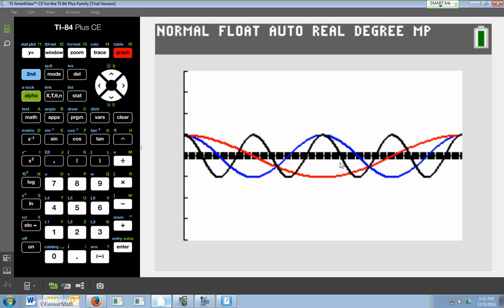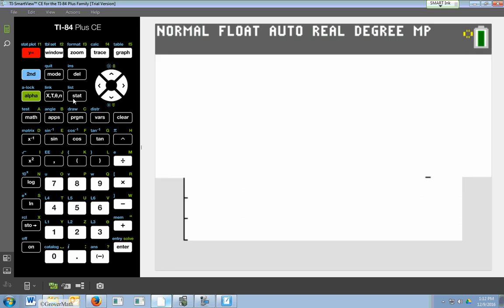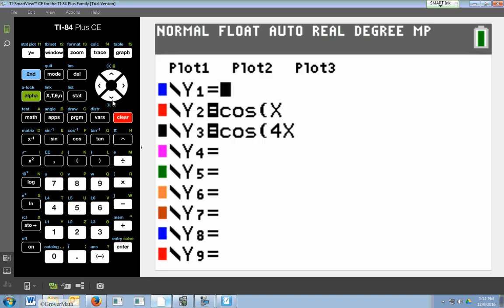If we were to change it to be cosine 4x, we'll see four full cycles of cosine. And frequency is how often. So it's how often am I going to see cosine in that 0 to 2 pi window, that 0 to 360 window.